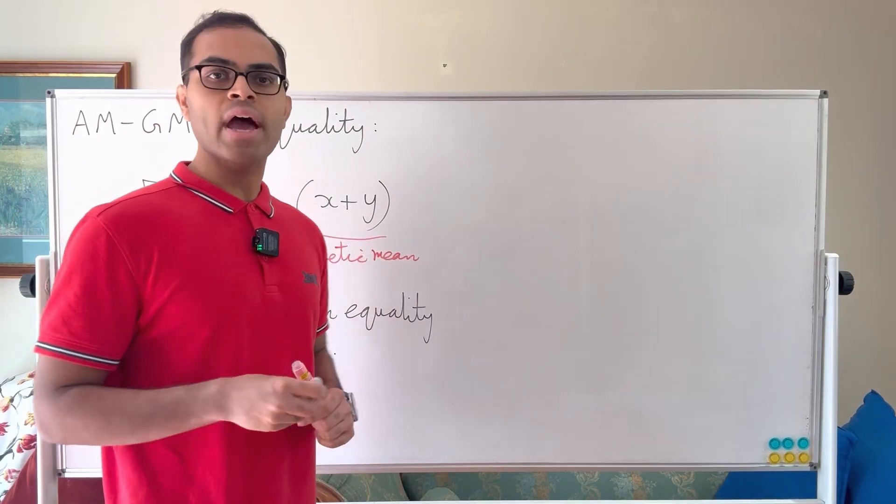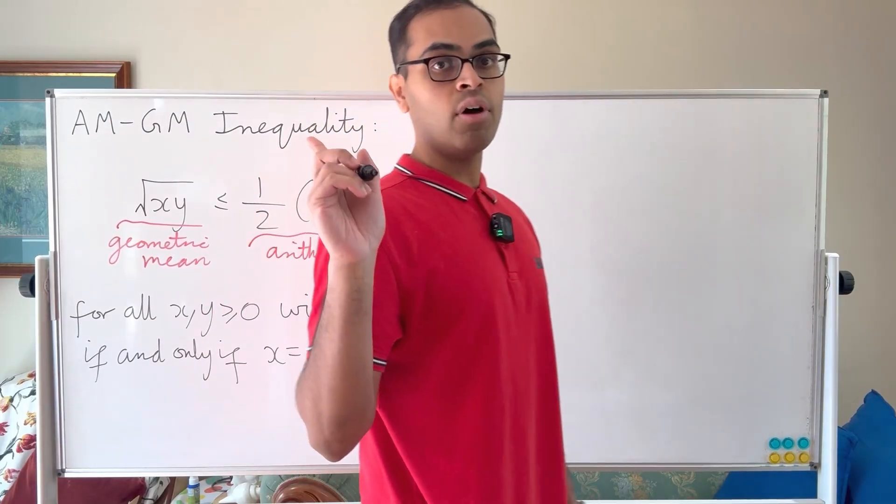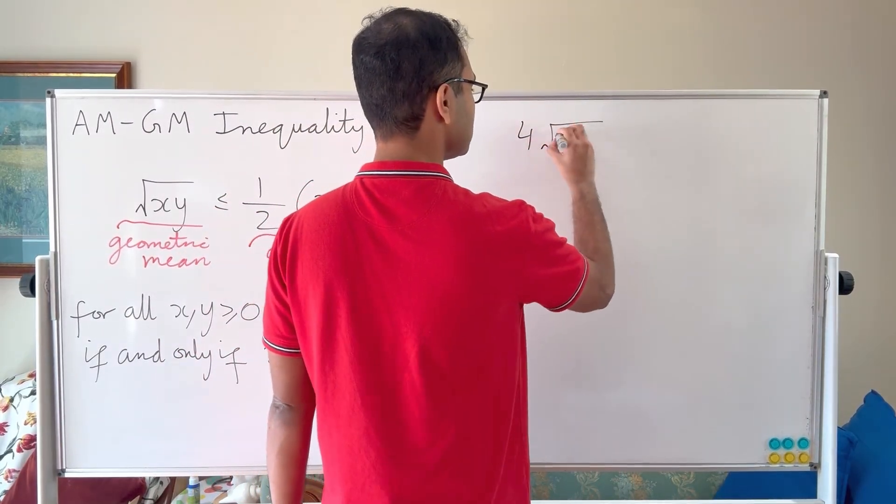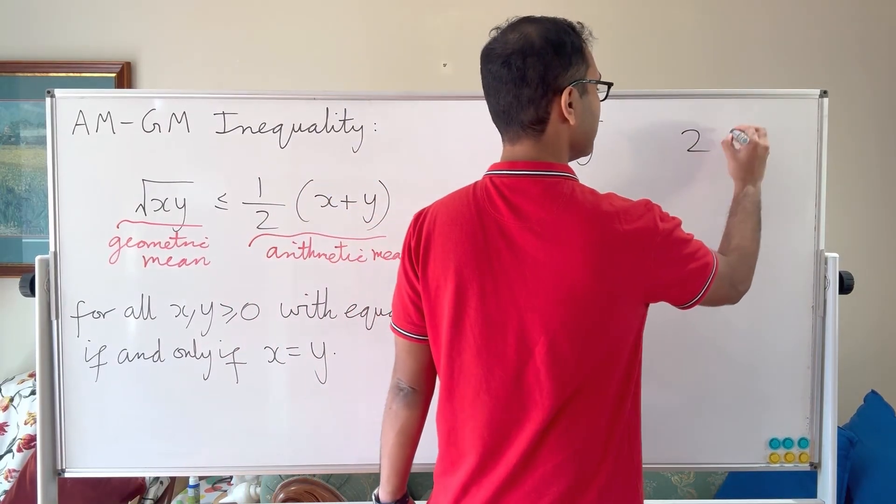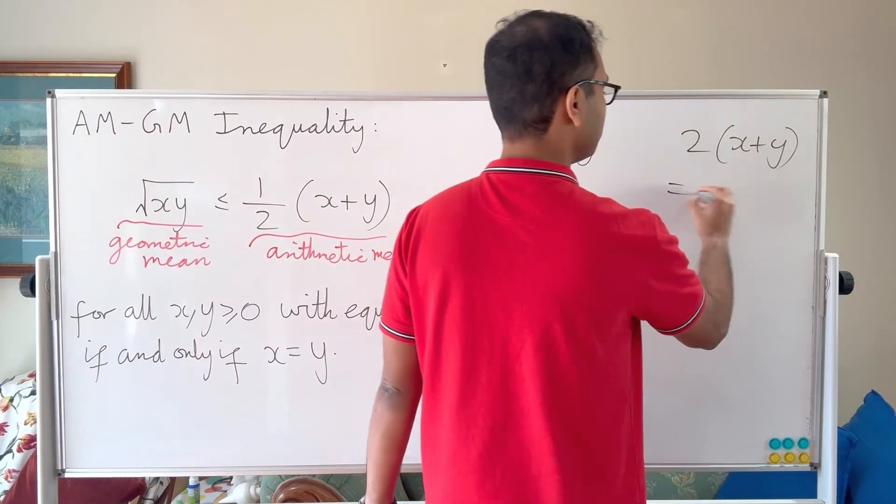The intuition behind this inequality comes from rectangles and squares, believe it or not. It's super intuitive. Suppose we multiply both sides of that inequality by four. The left-hand side becomes 4 times the square root of xy, and the right-hand side becomes 2 times x plus y, which equals 2x plus 2y.